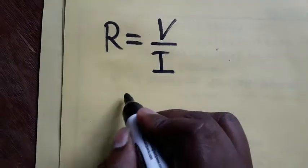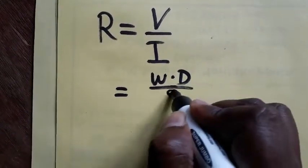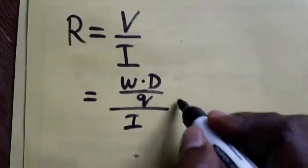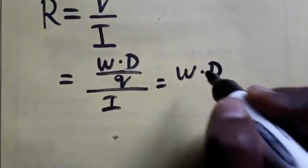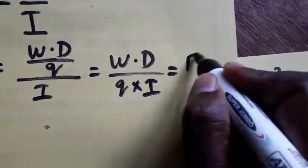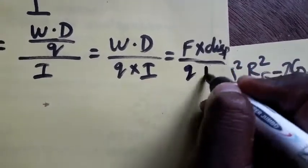So as we know, voltage is equal to work done by charge, and current. That means we will get work done by charge into current. So work done is force into displacement by charge into current.